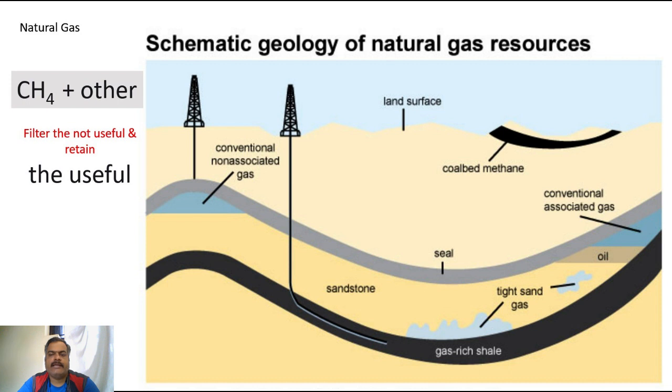It can be under the land area or it can be below the sea also. When it is under sea it is called seabed methane. The chemical in this will be methane which is CH4, carbon 1 and hydrogen 4. This gas is extracted and whatever cannot burn like carbon dioxide will be filtered out and what can burn, which is a useful compound, will be utilized as natural gas.